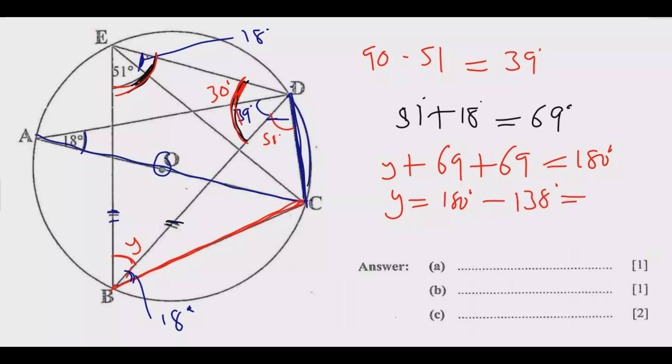So 180 minus 138 gives me 42. This angle should be 42 degrees. I'm just trying to find as many angles as I can before I look at the questions.